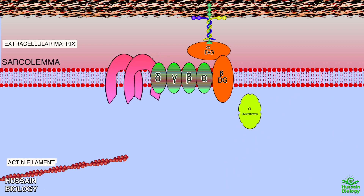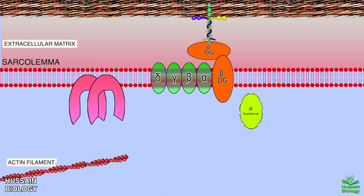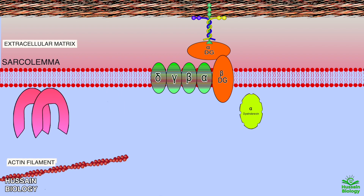Sarcospan is unable to reach the sarcolemma, and since sarcospan mediates AKT signaling, AKT signaling is also halted. Furthermore, when dystrophin is absent, neuronal nitric oxide synthase is also absent, so muscle contraction is dysregulated.